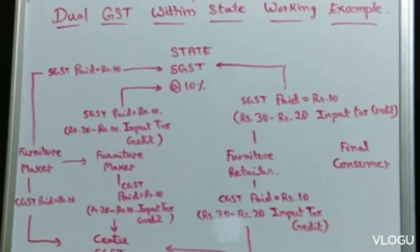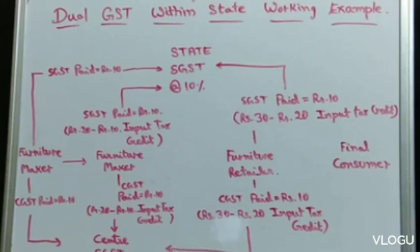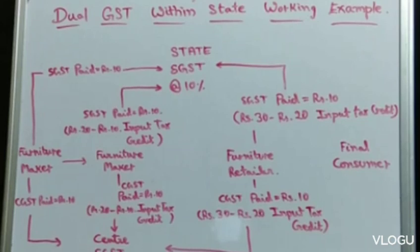For the furniture retailer, CGST paid is 30 minus 20 equals 10 rupees. This is input tax credit. This is how we calculate GST in Tally by using SGST and CGST within the state.